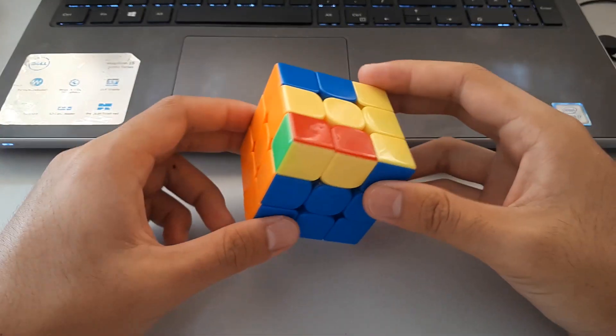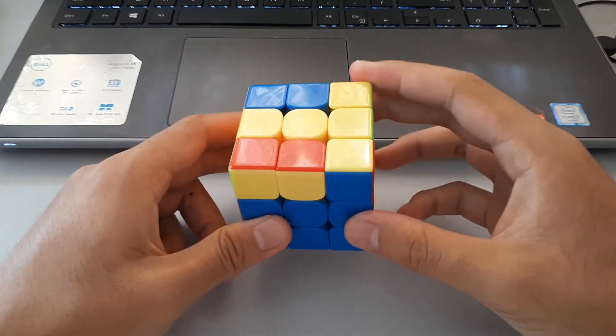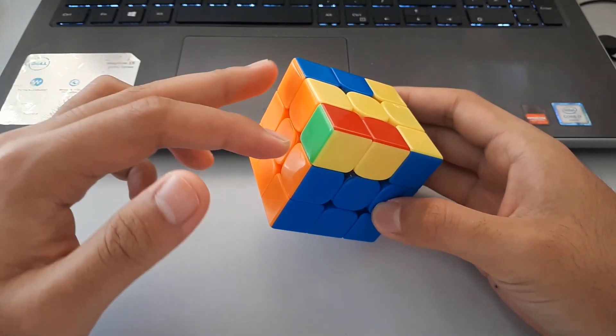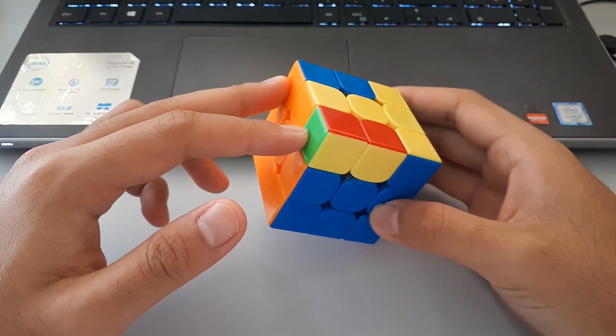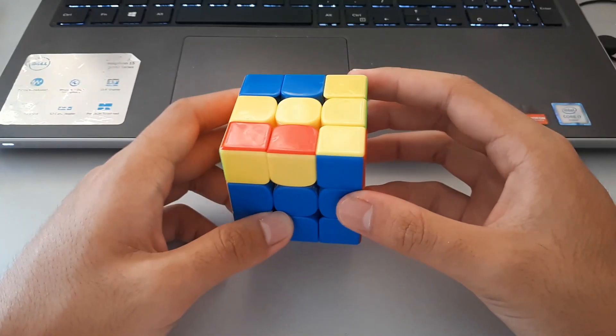The second T shape is this one here. Once again we want to hold it horizontally like the previous one, but this time we recognize this case by there not being any headlights here. This algorithm is also pretty simple, it's a sexy sledge.